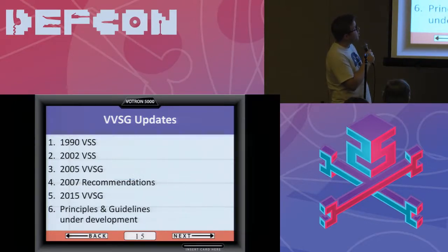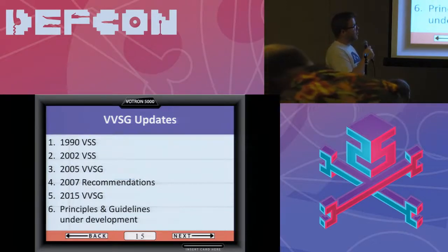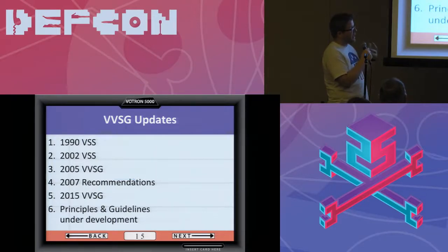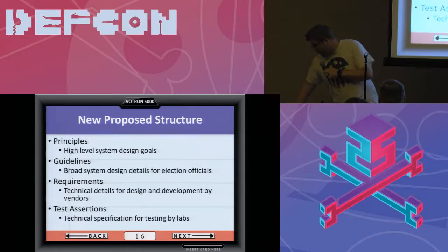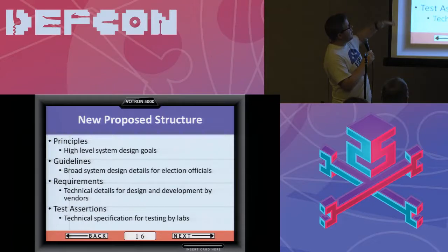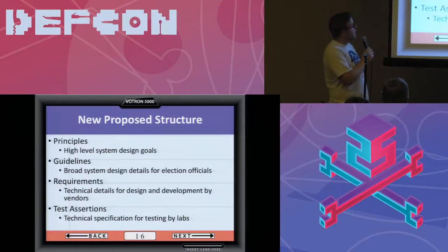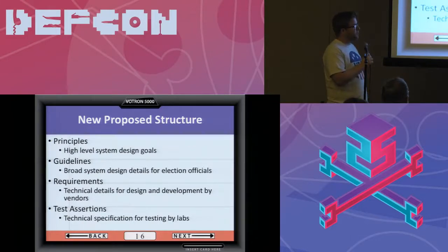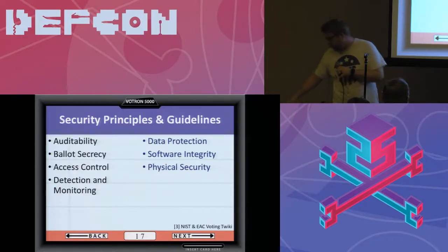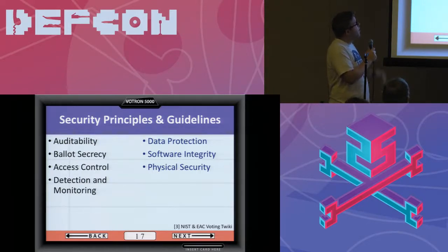NIST and EAC right now are actually working on a completely different way of looking at election standards. It's basically driven by outside input from voters and concerned citizens, and we're putting together these next-generation requirements. This new structure is going to have principles, guidelines, requirements, and test assertions. Principles and guidelines are ultimately what will be adopted by the federal government, while requirements and test assertions are going to be more malleable — because what we've really seen is that there's been a lot of changes and sometimes folks get locked into requirements from five or ten years ago.